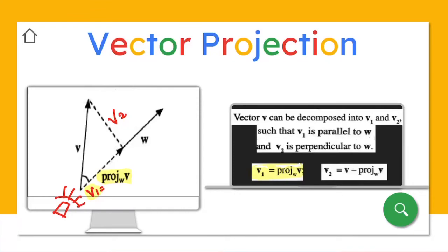So how about your v2? Now we can see that we can build an equation here: v is equal to v1 plus v2, because this is going in this direction and v2 is going in this direction, so it will become v.